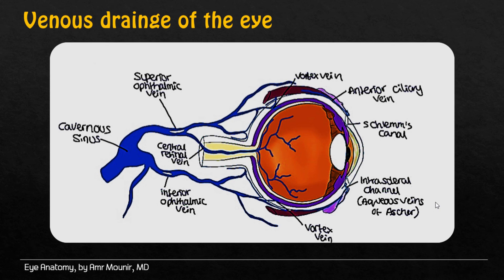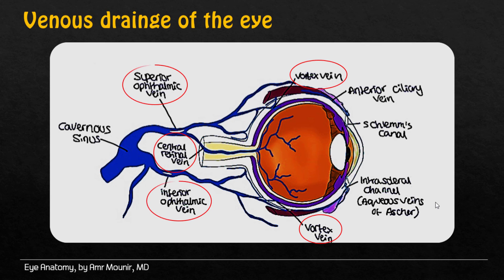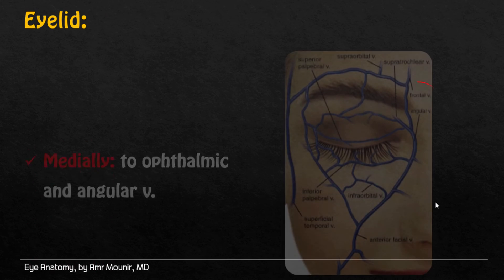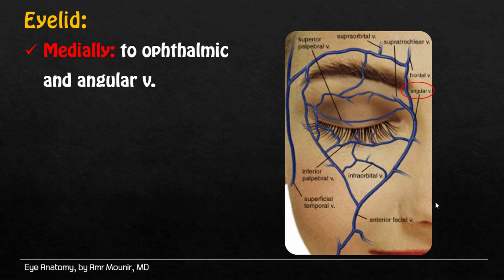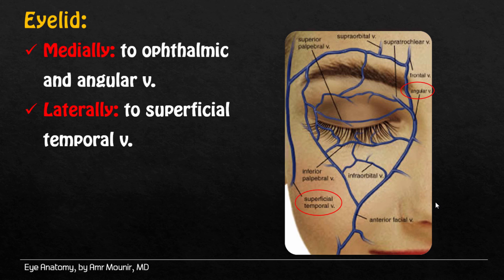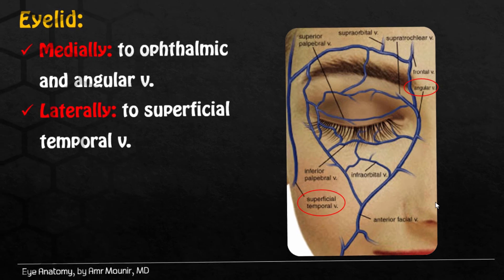Venous drainage of the eye is done by four vortex veins and the central retinal vein, all of which are drained by two ophthalmic veins — the superior ophthalmic vein and the inferior ophthalmic vein. Both ophthalmic veins are drained by the cavernous sinus of the brain. Eyelid venous drainage: medially by the ophthalmic and angular veins, and laterally by the superficial temporal veins.